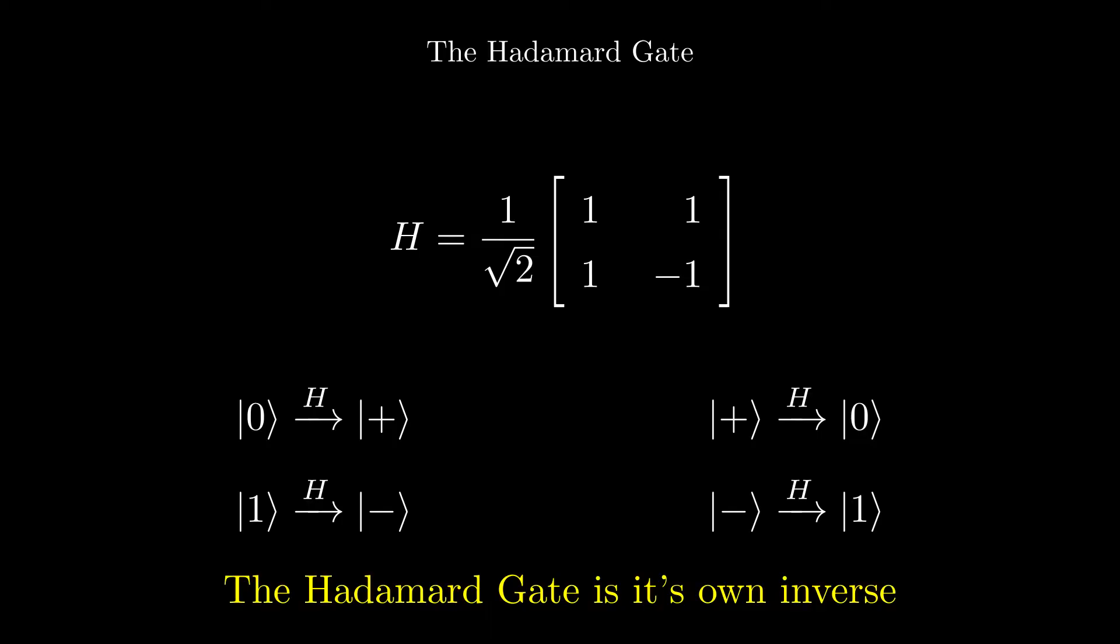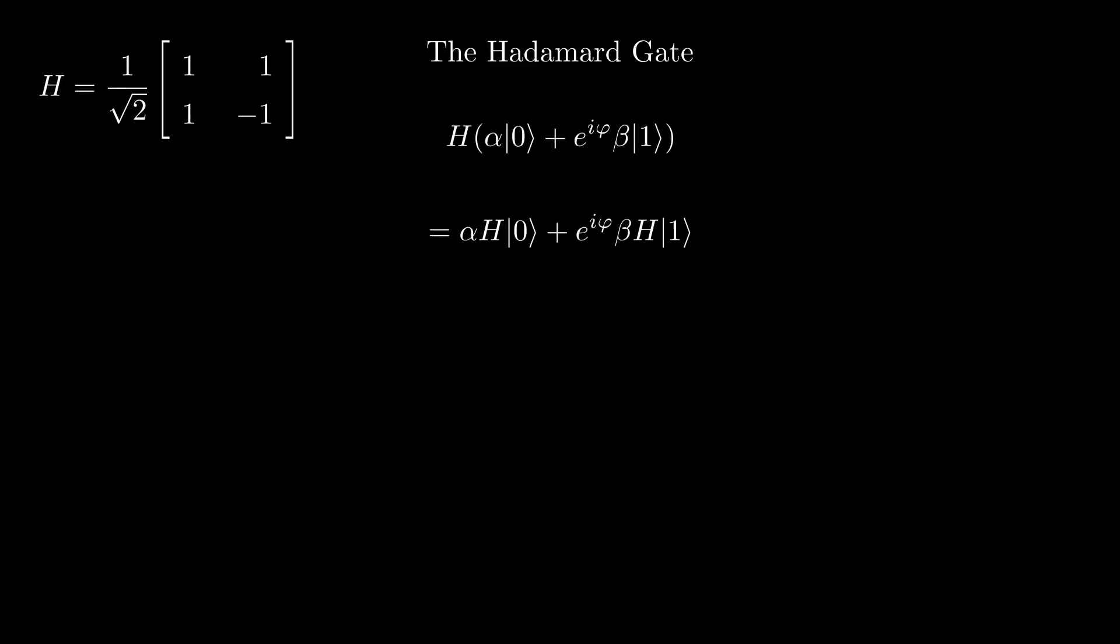If we wanted to apply a Hadamard gate to an arbitrary qubit state in Dirac notation, we can replace the zero with the plus state, and the one with the minus state, and expand.